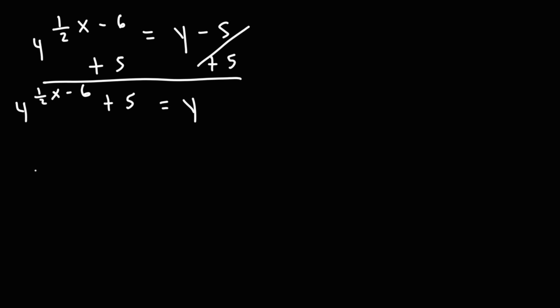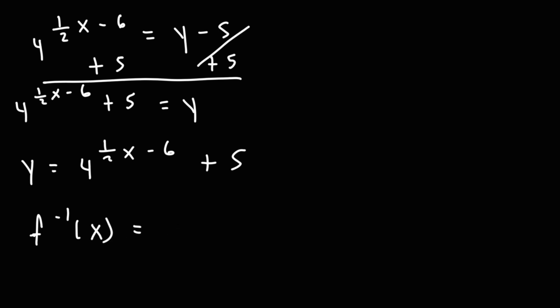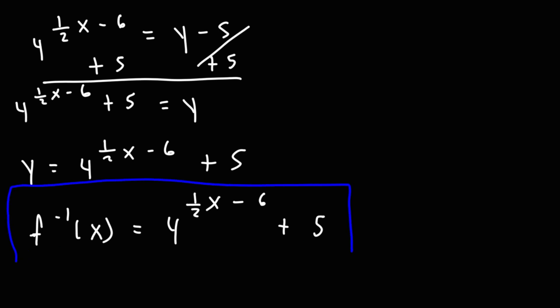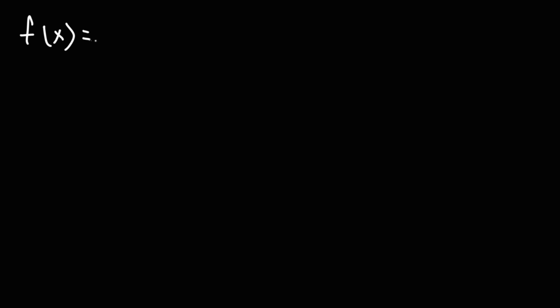We don't want to stop here — we want to replace y with the inverse of f of x. So the inverse of f of x is going to be 4 raised to the 1 half x minus 6 plus 5. That is the answer to this problem. Now let's try another problem, but this time we're going to use the natural log function as opposed to the regular log function.